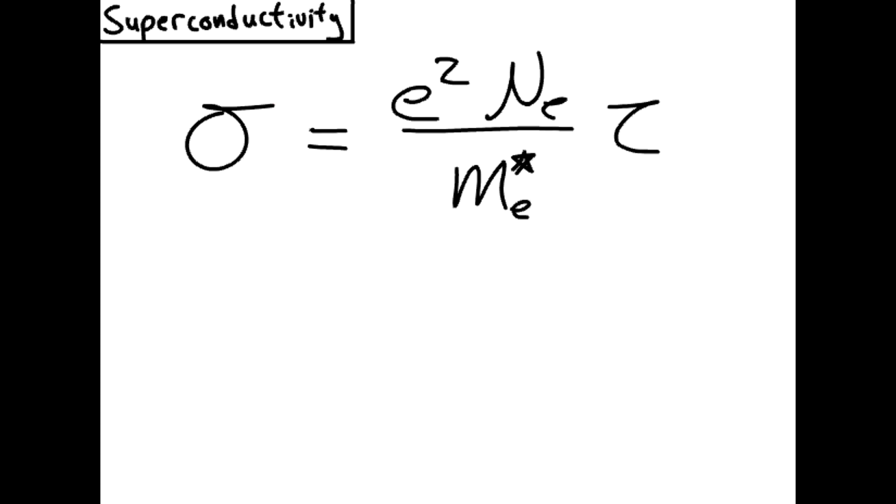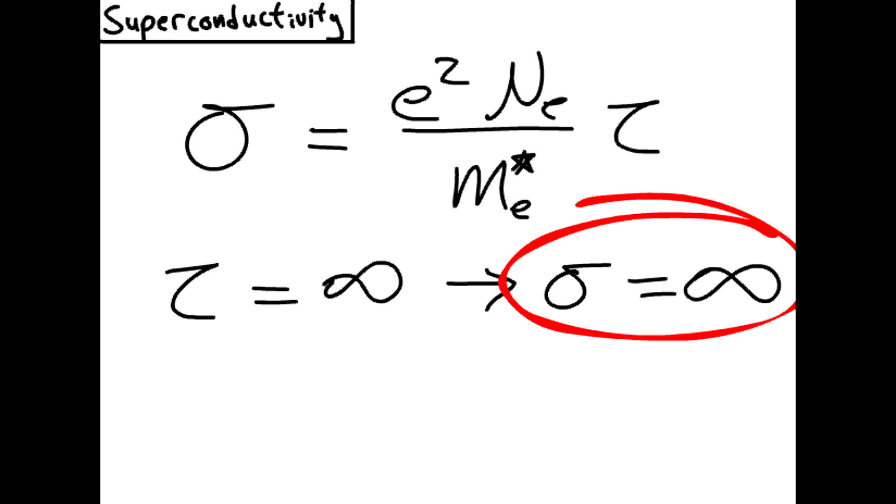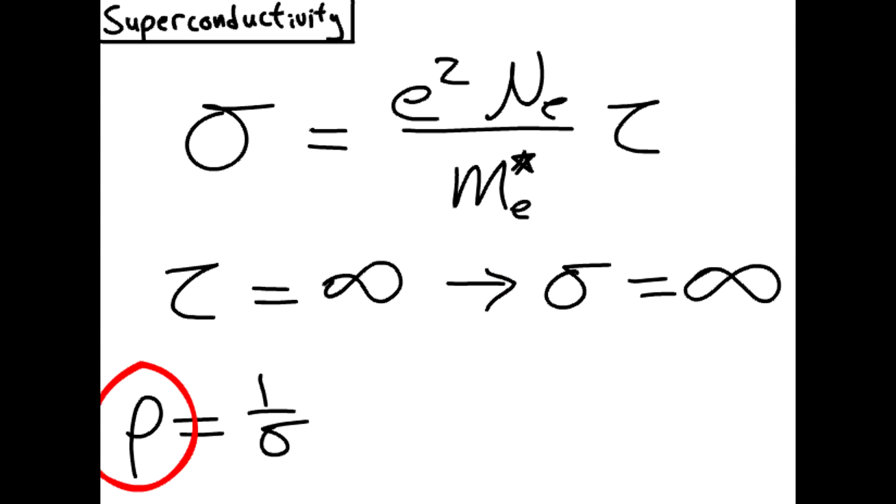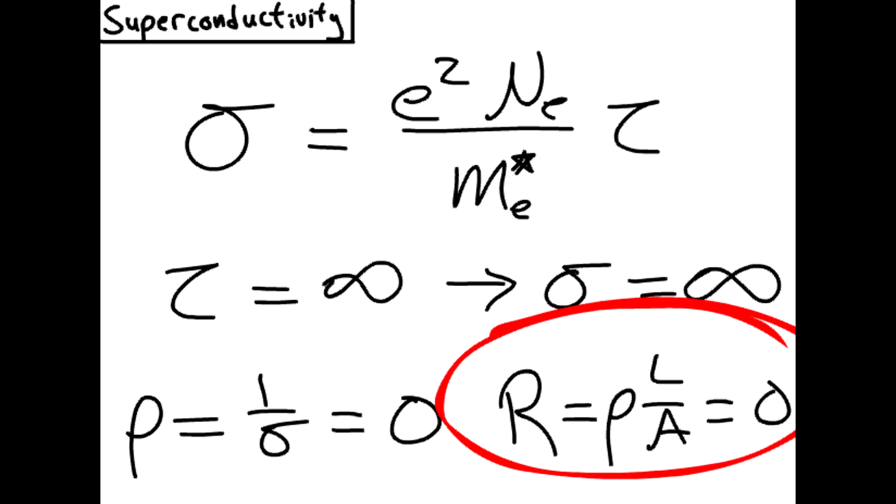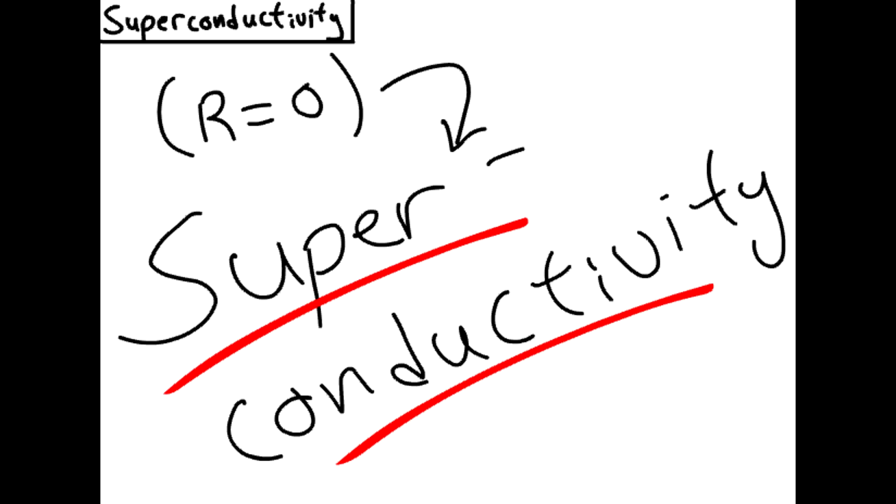Recall that conductivity, sigma, is defined on basis of the electron scattering time, tau. If the electrons never collide with anything, then tau is infinite and so is sigma, meaning that our resistivity, rho, drops to zero and our macroscale resistance, R, also drops to zero. We have superconductivity.